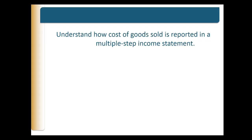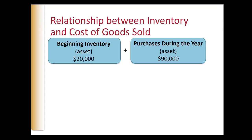Now we're going to understand how cost of goods sold is reported in a multiple-step income statement. Let's look at the relationship between ending inventory in the balance sheet and cost of goods sold in the income statement using a simple example for a local Best Buy. Assume the store begins the year with $20,000 of DVD player inventory. During the year, the company purchases additional DVD players for $90,000. The total cost of inventory available for sale is $110,000 — beginning inventory plus purchases.